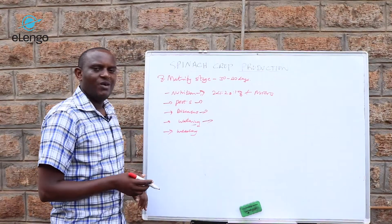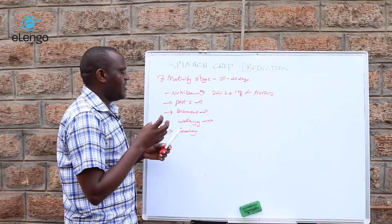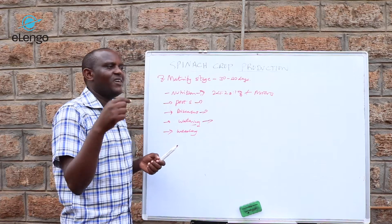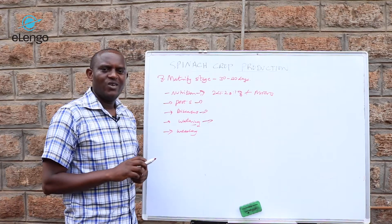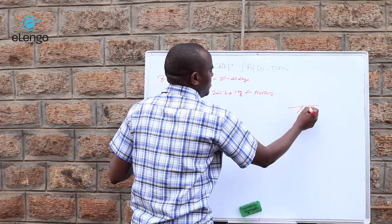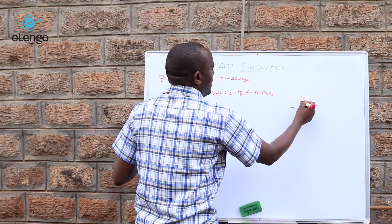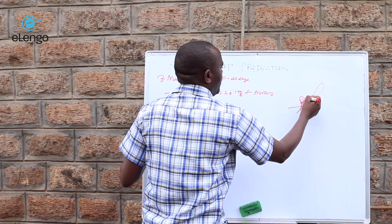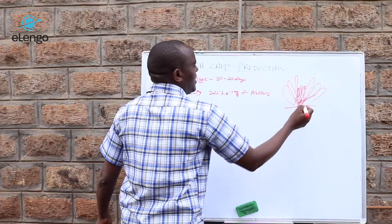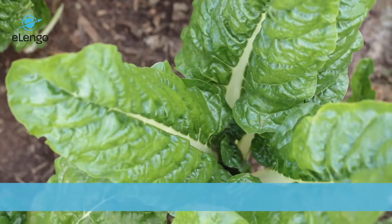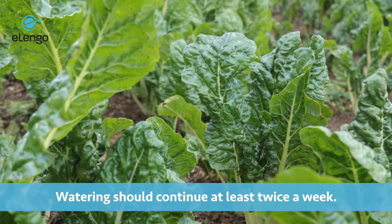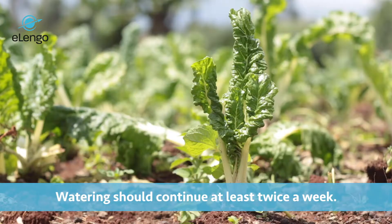Of course, we have the watering aspect since the plant is still growing. Even if the outer leaves are hardening up, we have the inner leaves that are also growing. The spinach crop has roots, then the stem, then the leaves. The outer leaves are the ones that are maturing, but the inner leaves are still growing. Therefore, watering should also be done — twice a week irrigation. If the rains are sufficient, then no need for irrigation.